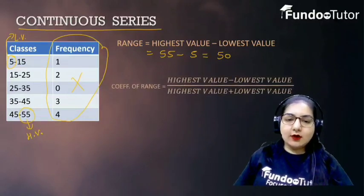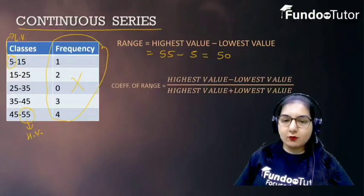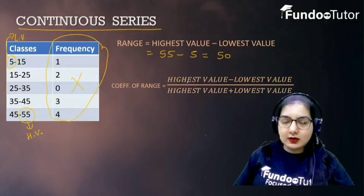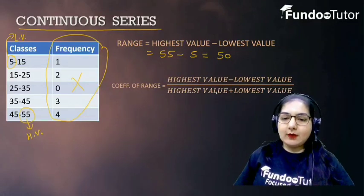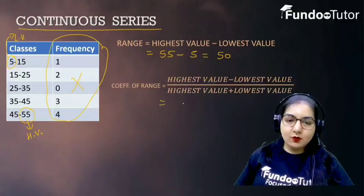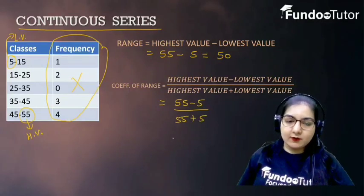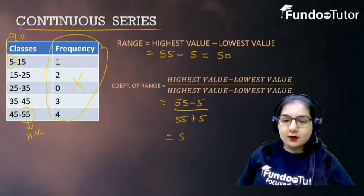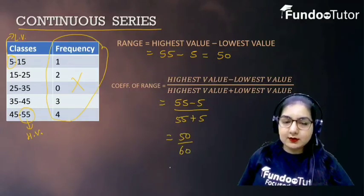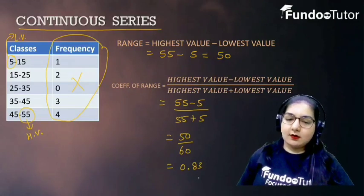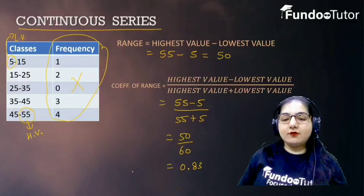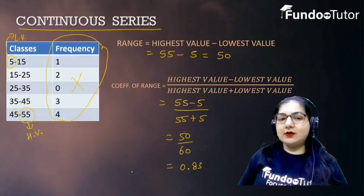To calculate the coefficient of range, the formula is: coefficient of range = (highest value − lowest value) / (highest value + lowest value). Substituting: (55 − 5) / (55 + 5) = 50 / 60 = 0.83. So, coefficient of range is 0.83.